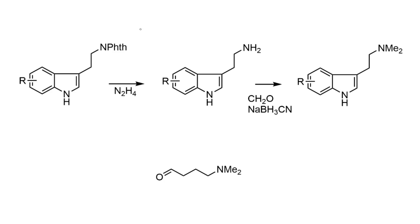To complete this synthesis, the nitrogen needs to be methylated. The phthalimido group was removed by treatment with hydrazine, liberating the free terminal amine, which was then treated with a mixture of formaldehyde and sodium cyanoborohydride to afford the doubly methylated product. Of course, you can bring the dimethylamino group in from the start by using an appropriate aldehyde.